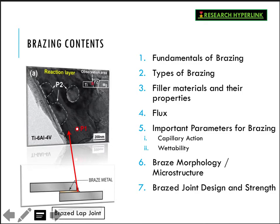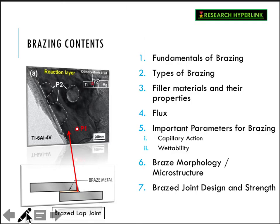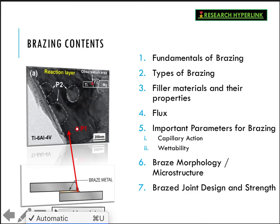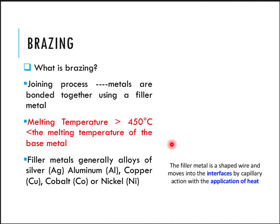Starting with the brazing process, we will look at the fundamentals, types of brazing, filler types, properties, the function of flux, important parameters, braze morphology, and braze joint design. A braze joint consists of two parts with a filler material in between. Under scanning or transmission electron microscopy, you can see the base material and the filler material clearly, demonstrating how different dissimilar materials are joined using the brazing process.